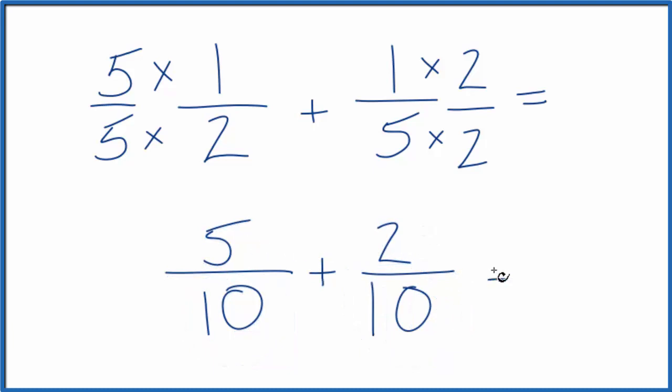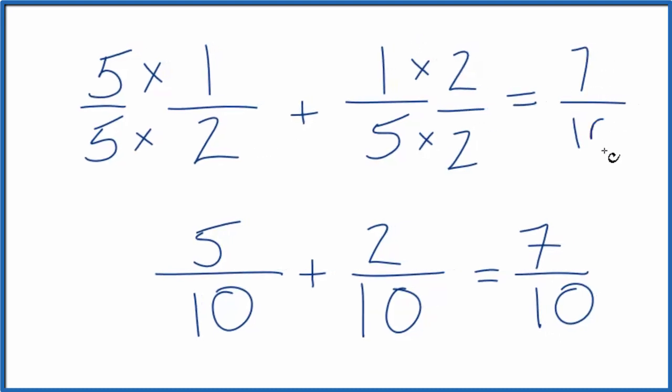Five plus two equals seven, and then we bring the ten across, and one-half plus one-fifth, that equals seven tenths.